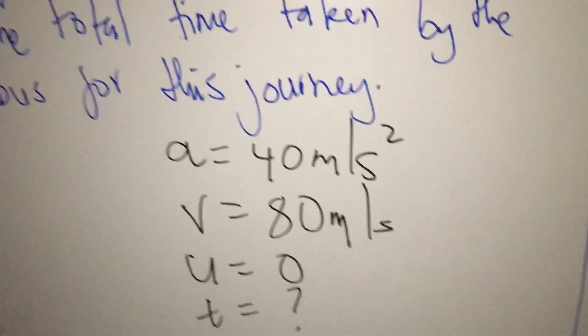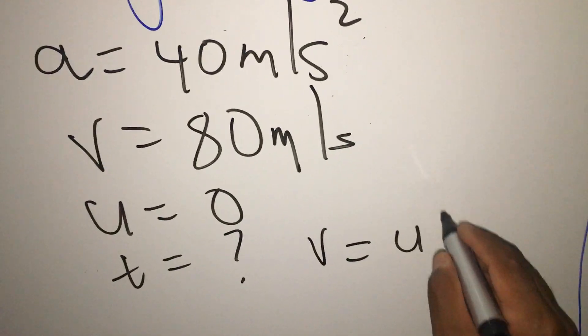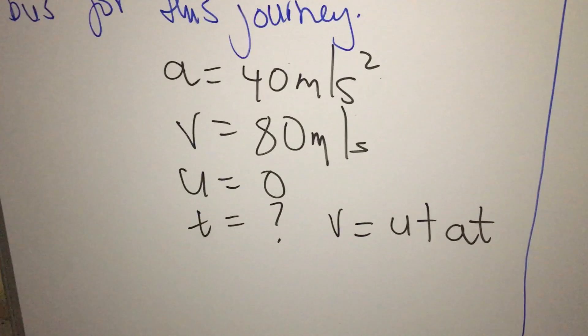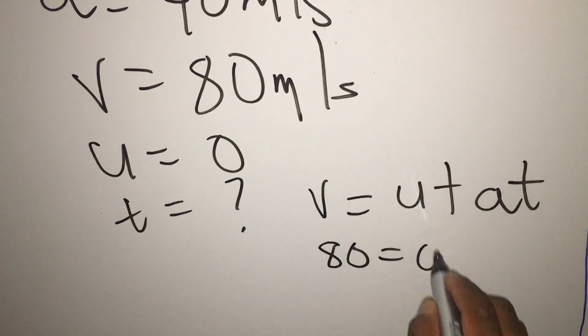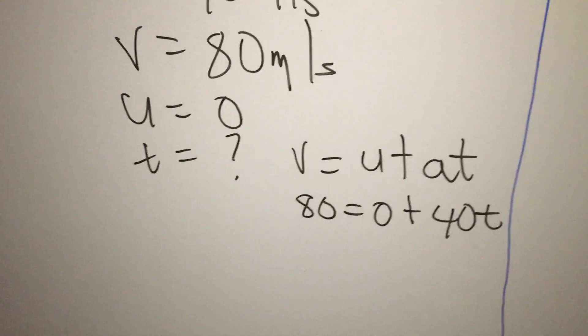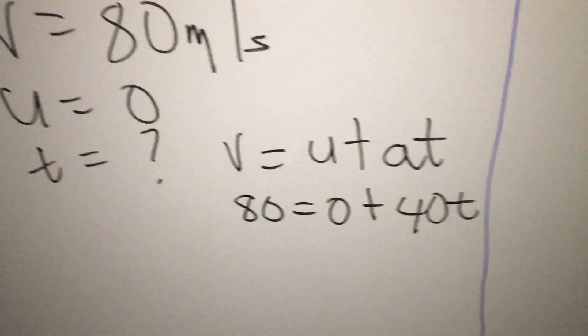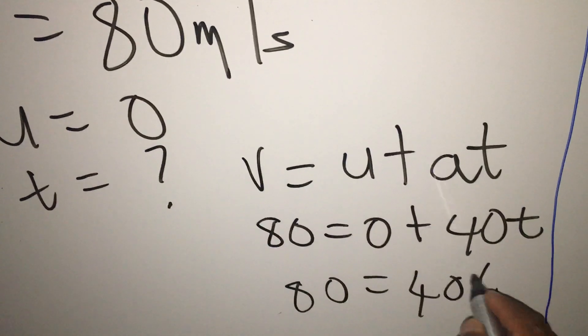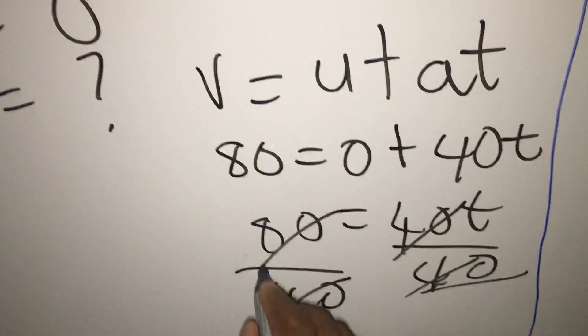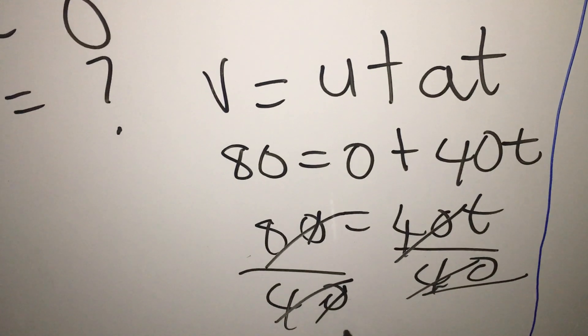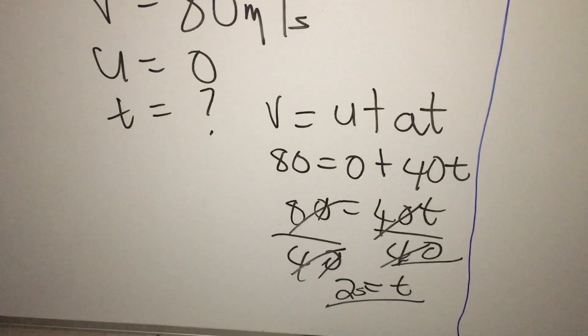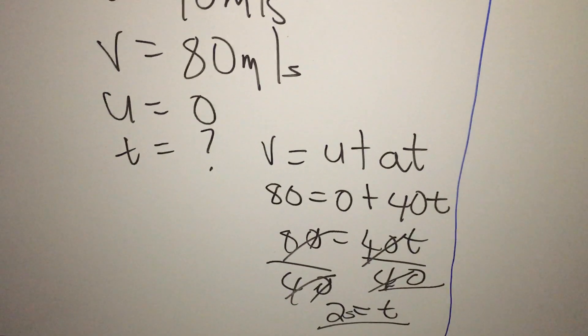You shall use V equals U plus AT. So what is my V? V is 80. My U is 0 plus what is my A? My A is 40 times T that I'm looking for. So I'm going to have 80 equals 40T, and then you divide both sides by 40. 40 into 80 is two times, so your time is given in seconds, which is two seconds.